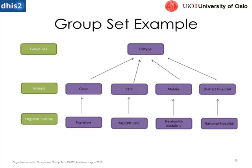Group sets are another way to organize org units. The org units and facilities in the bottom row exist on different levels of the hierarchy — levels 1 through 5 — but many facilities belong to parallel or different hierarchies that are often non-geographical. For those cases we use groups and group sets.